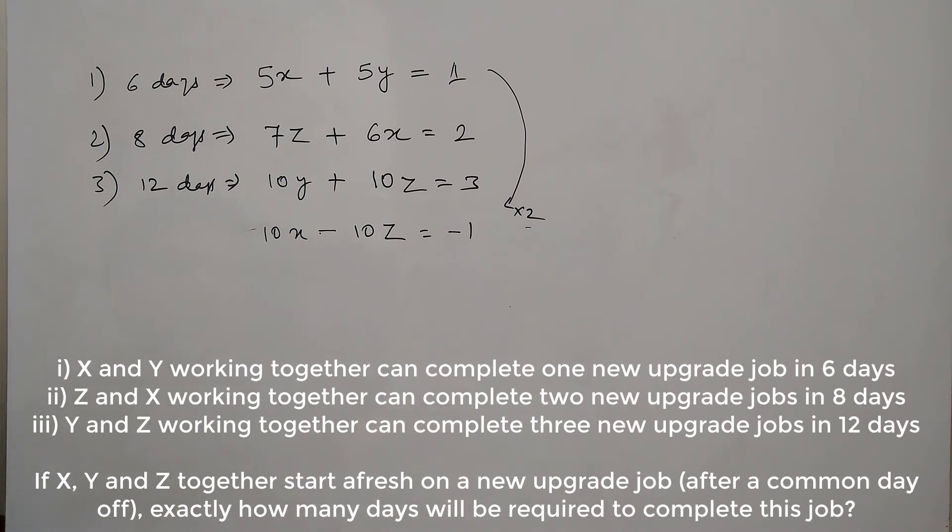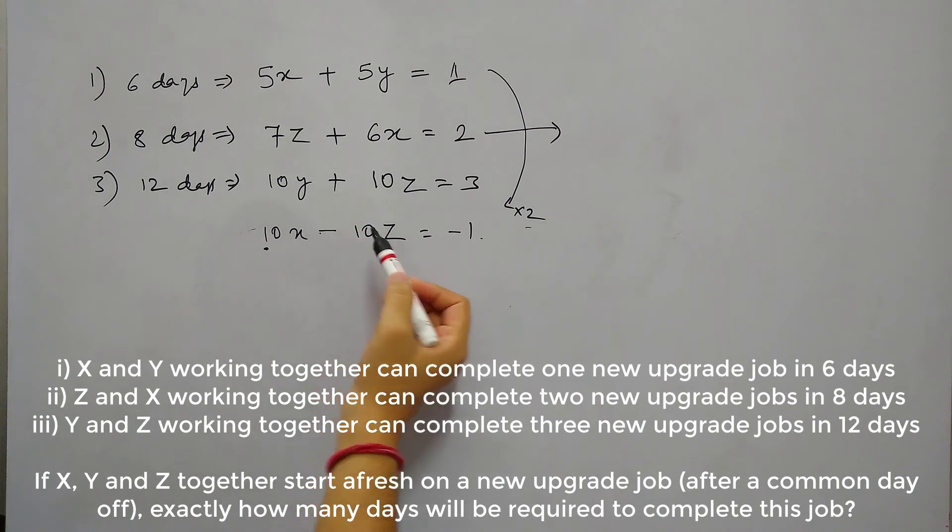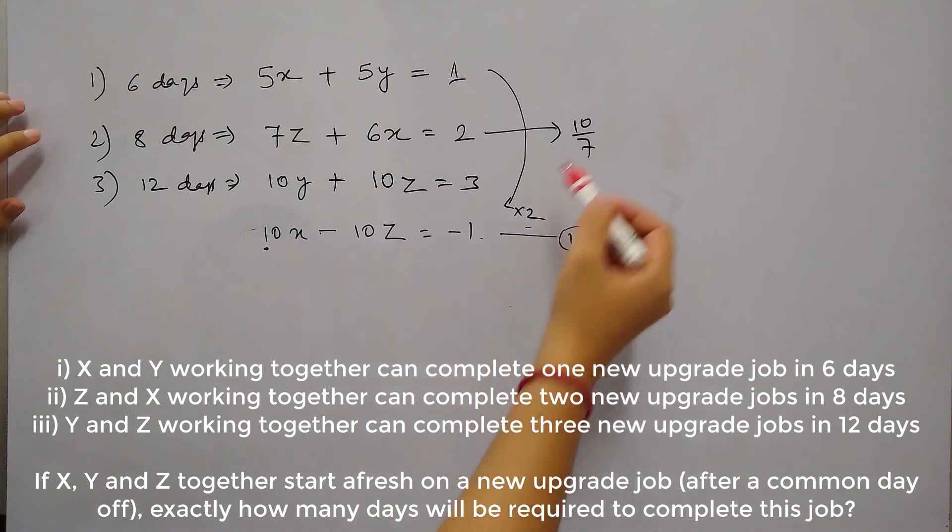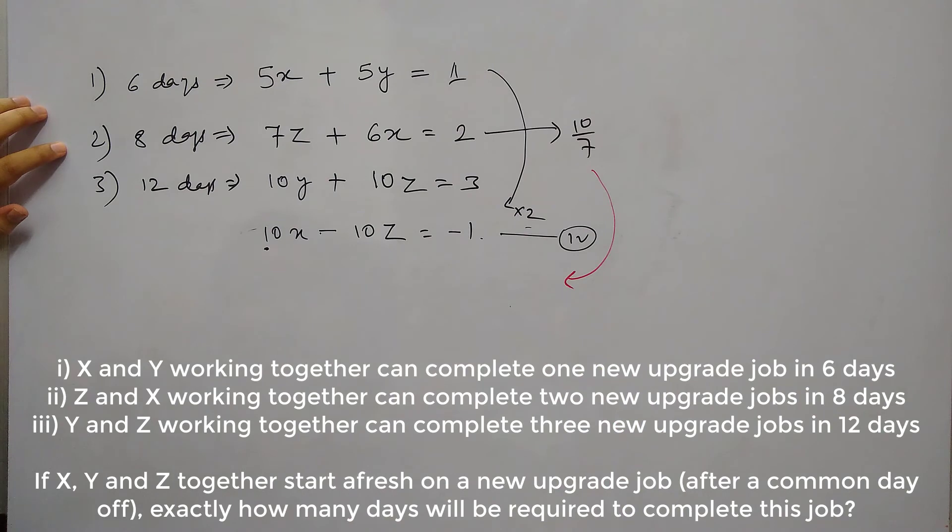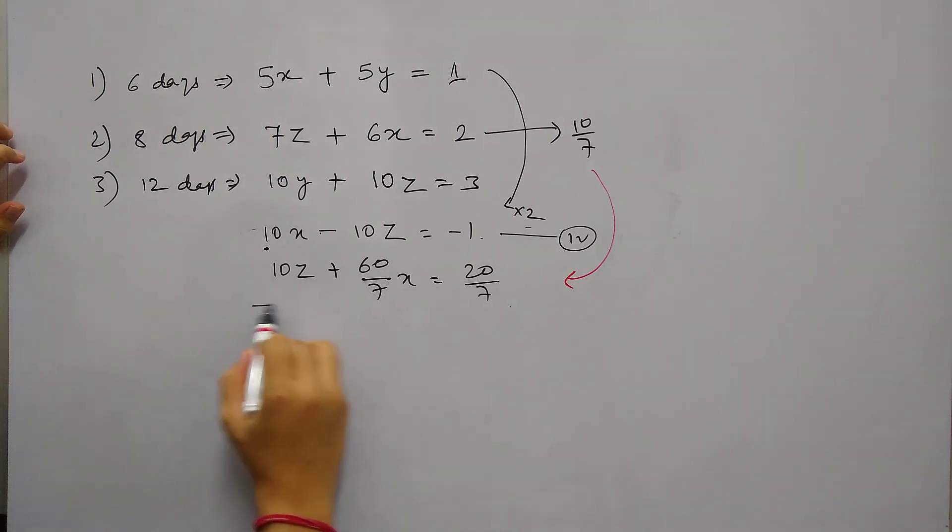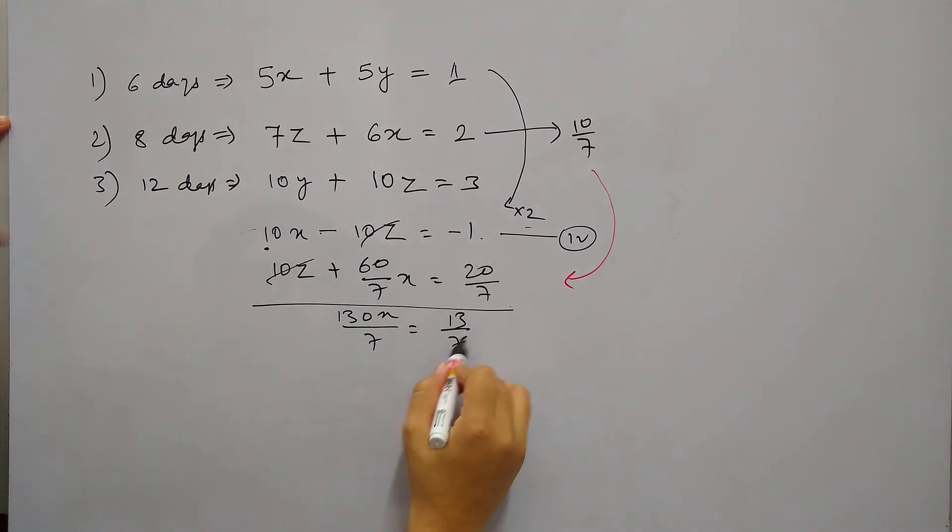And now to calculate the value of X, we can substitute this equation in this equation. Or other way around is, we can multiply this equation by, here you see, 10 by 7. And then if we add this equation 2 and the 4th equation that we have got, we will get the value of X. So after multiplying this equation, equation number 2 by 10 by 7, then we can rewrite that equation as 10Z plus 60 by 7X equals to 20 by 7. And if we add this, Z will get cancelled. X will be 130X by 7 equals to 20 minus 1, 13 by 7.